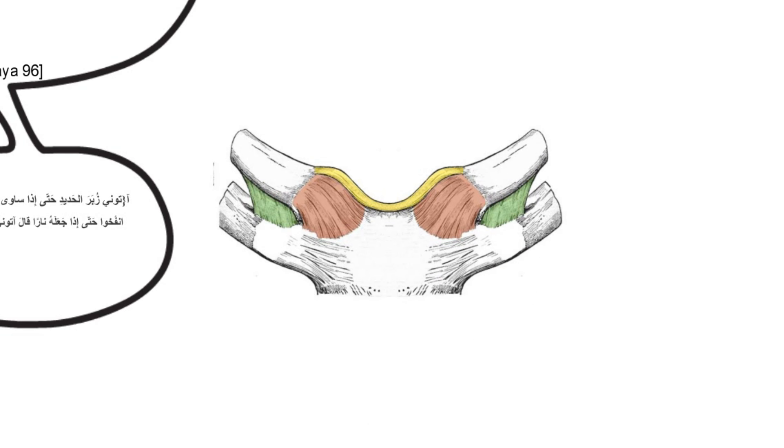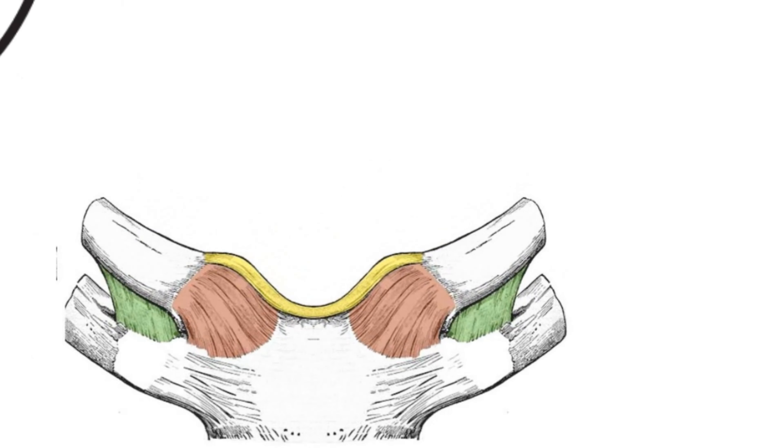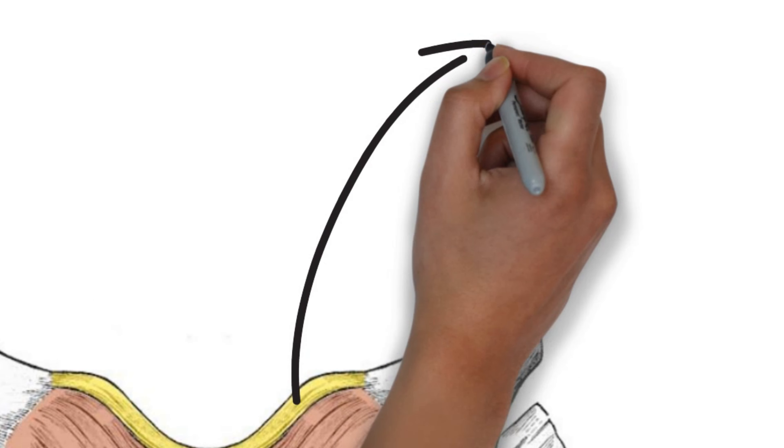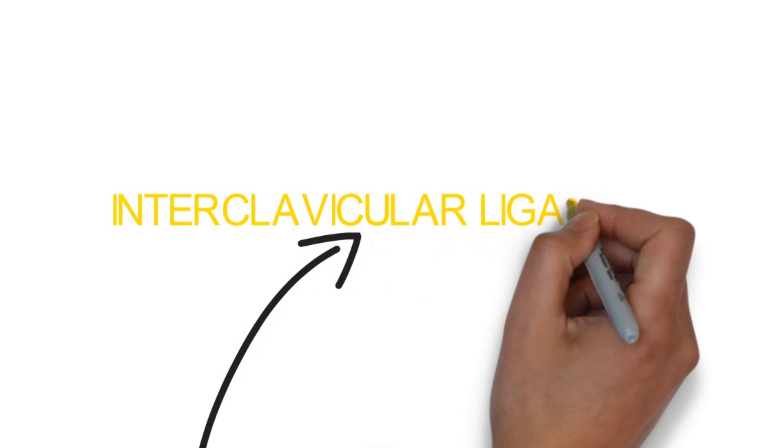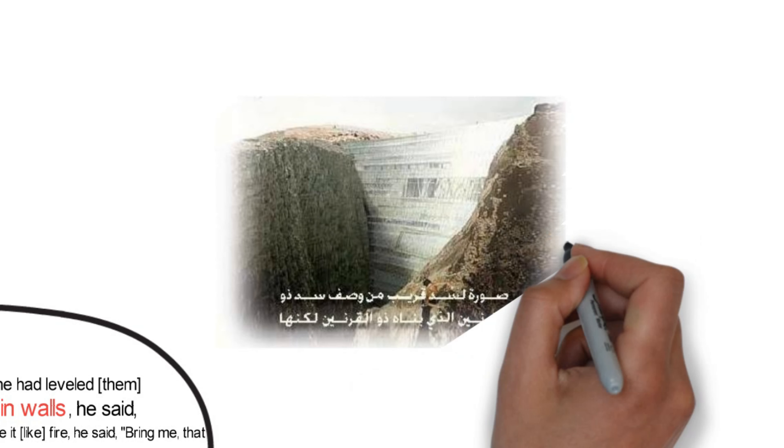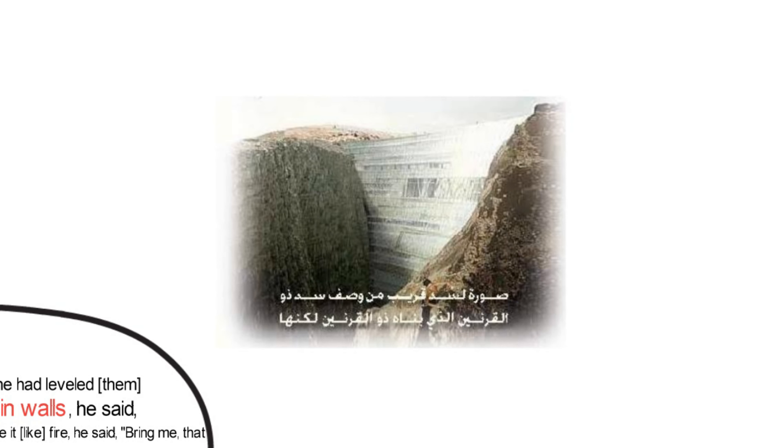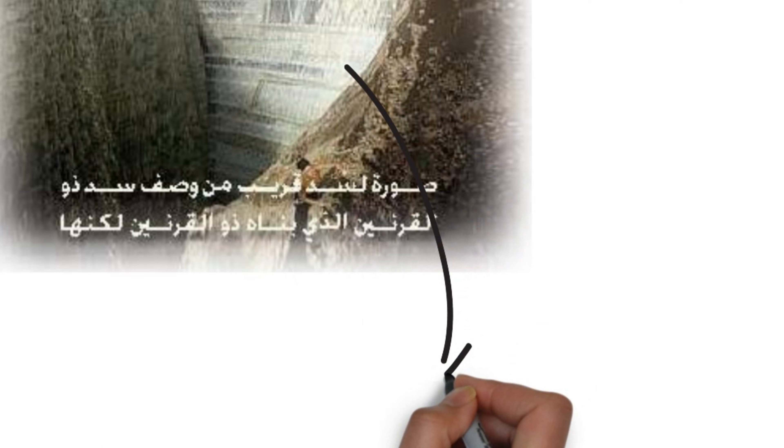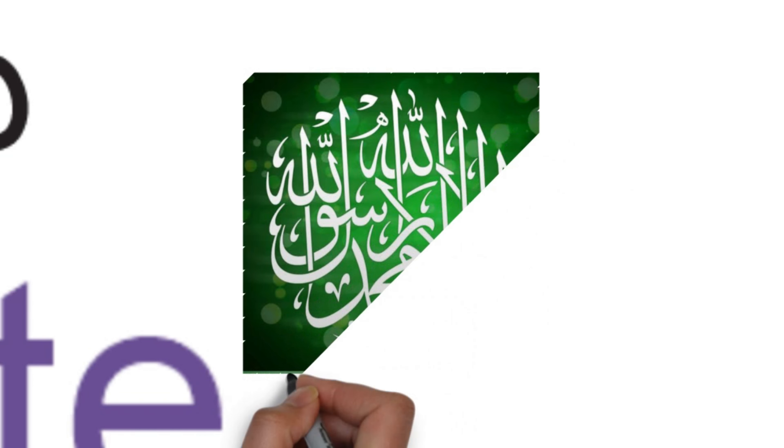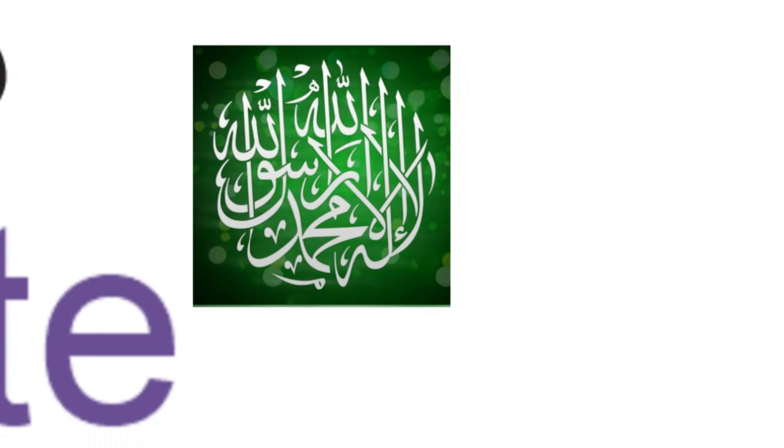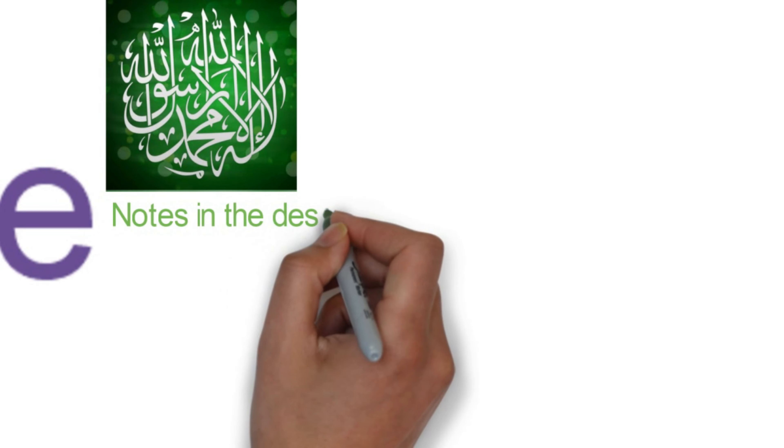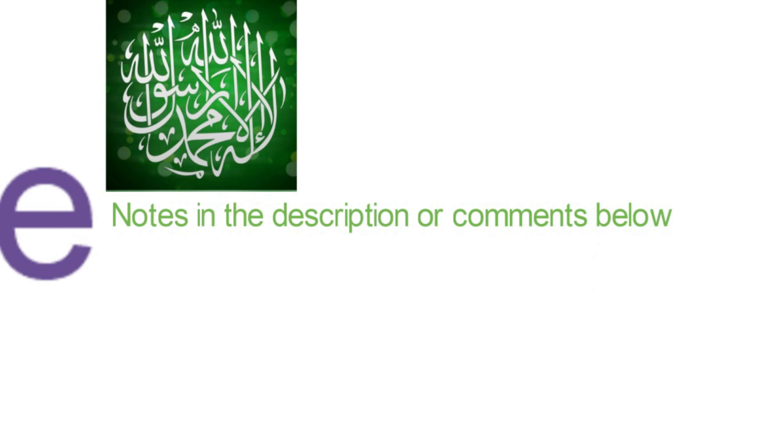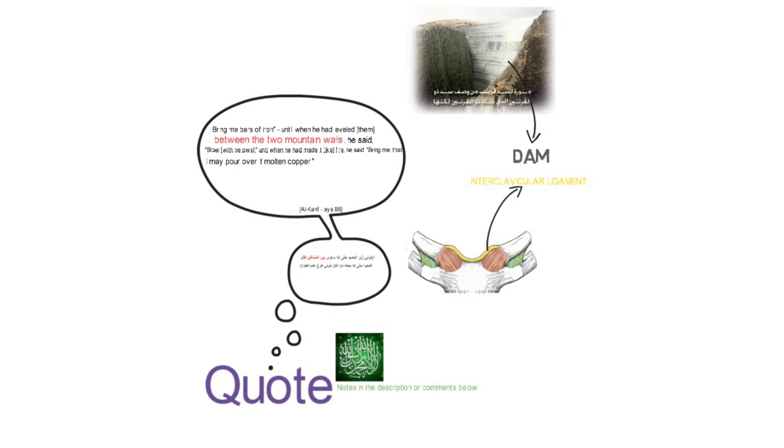Here we have between the two clavicles, the interclavicular ligament. That's why I brought this verse. It's a very good way to remember it, an example. Here we have the two mountain walls, and between them a dam. Here we have the two clavicles and between them the interclavicular ligament.